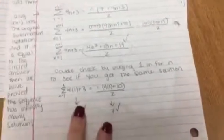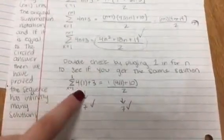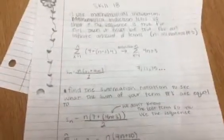And then this is just double checking that it works. So I plugged 1 in for n, and I both got the result of 7. So that proves that this sequence has an infinite amount of solutions.